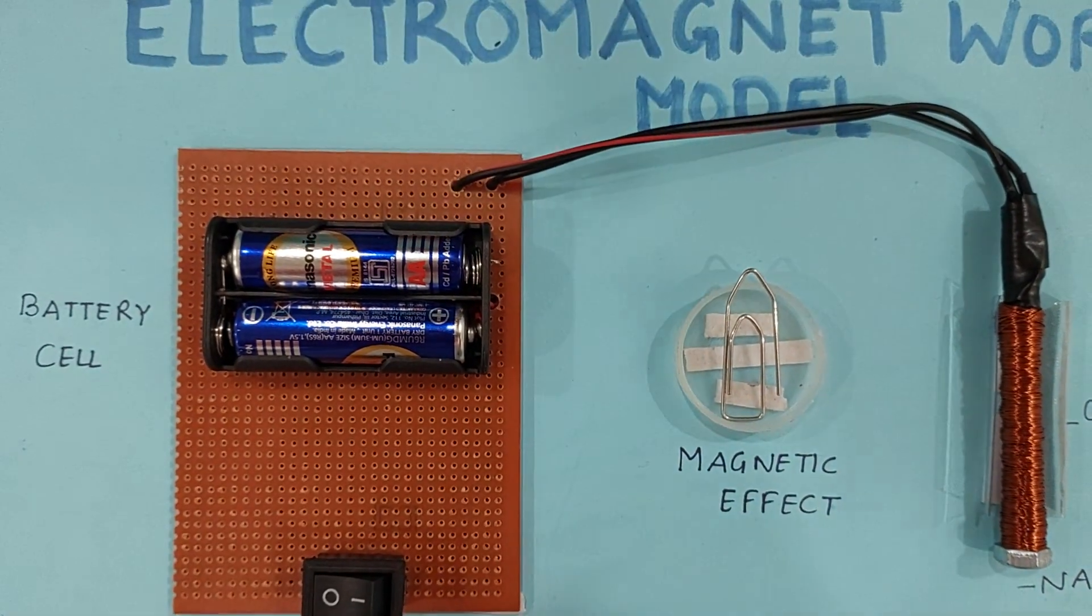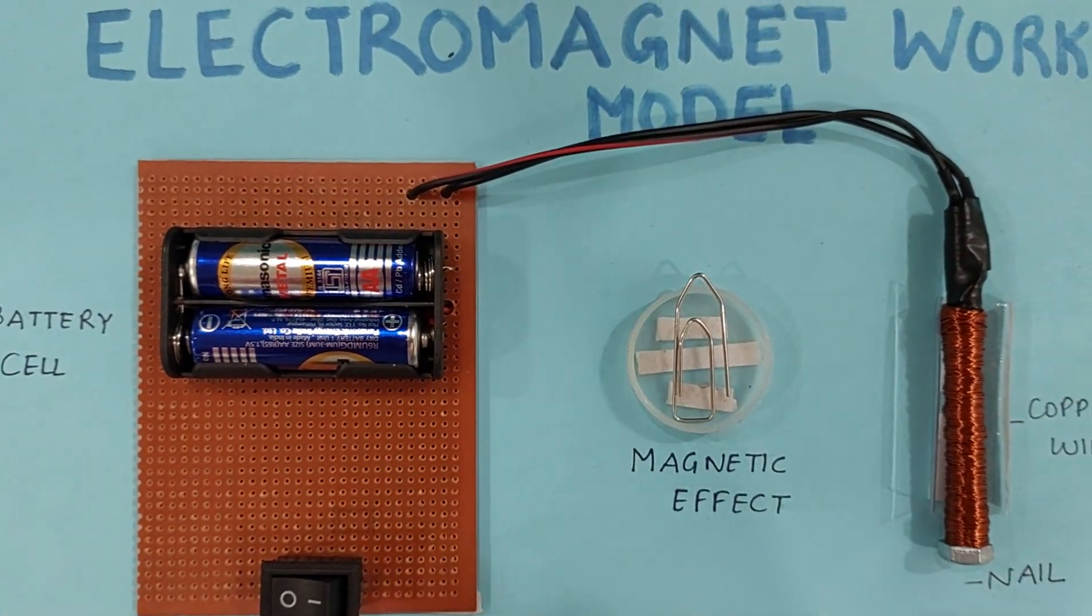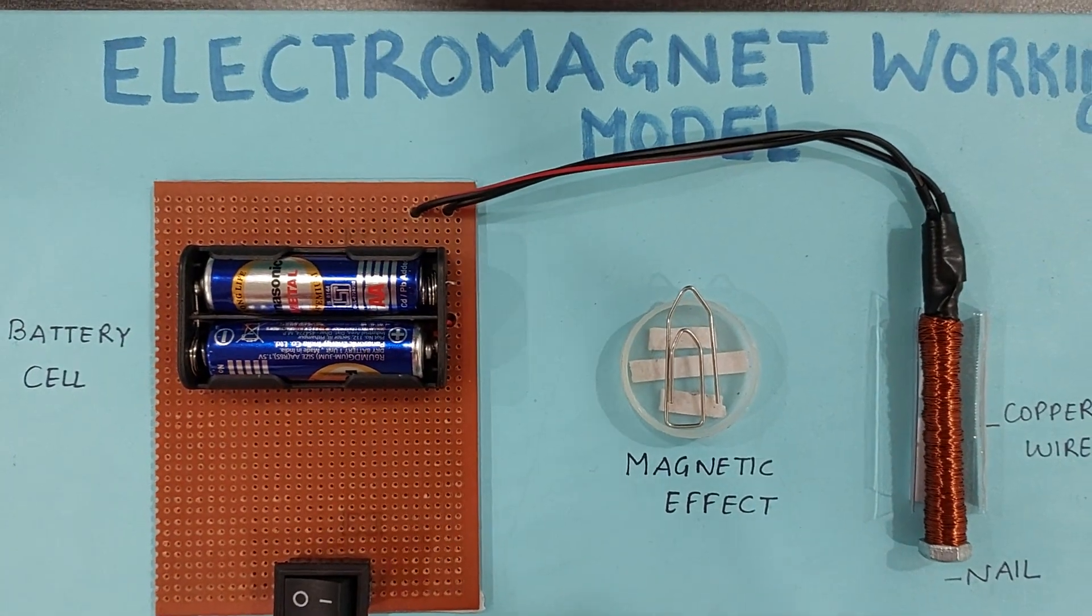Okay, and you know this electromagnet is also used in many things. It is used for making cranes, for electric bell, and in many toys these electromagnets are used.